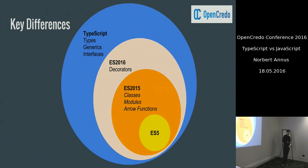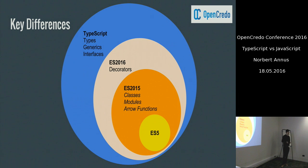The current standard has already introduced various things for what we already had a desperate need for, like classes, modules, arrow functions, or otherwise called lambdas. On top of this, ES2016 has a proposal for decorators, which is already included in TypeScript as an experimental feature. But the real power of TypeScript comes with types, and beyond that it supports generics and interfaces, which makes it quite a strong language.